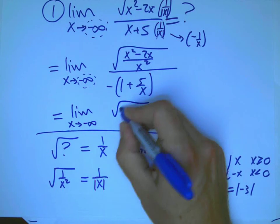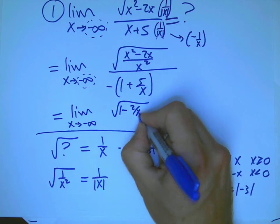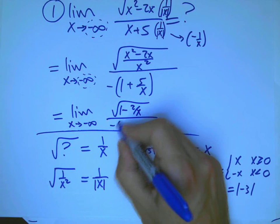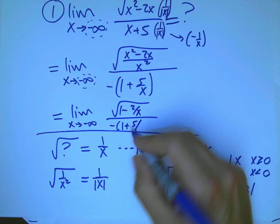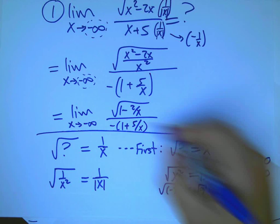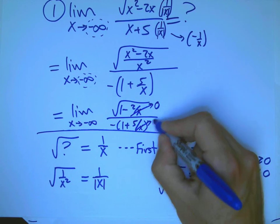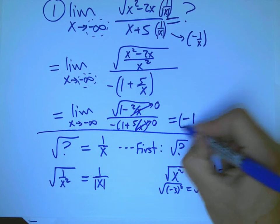Now I'm good to go. Because the top has turned into 1 minus 2 over x square rooted. The bottom is 1 minus the quantity, minus the quantity 1 plus 5 over x. This goes to 0. This goes to 0. And I get minus 1.